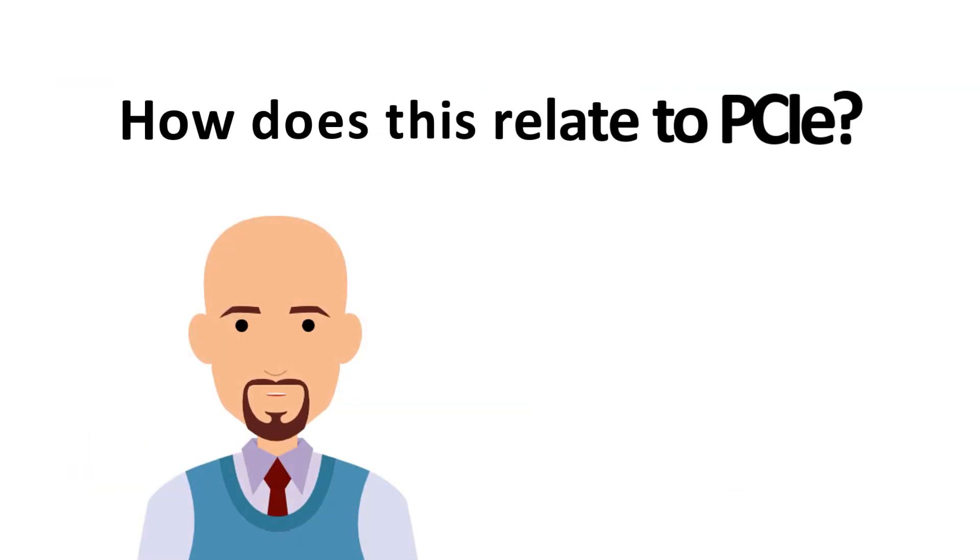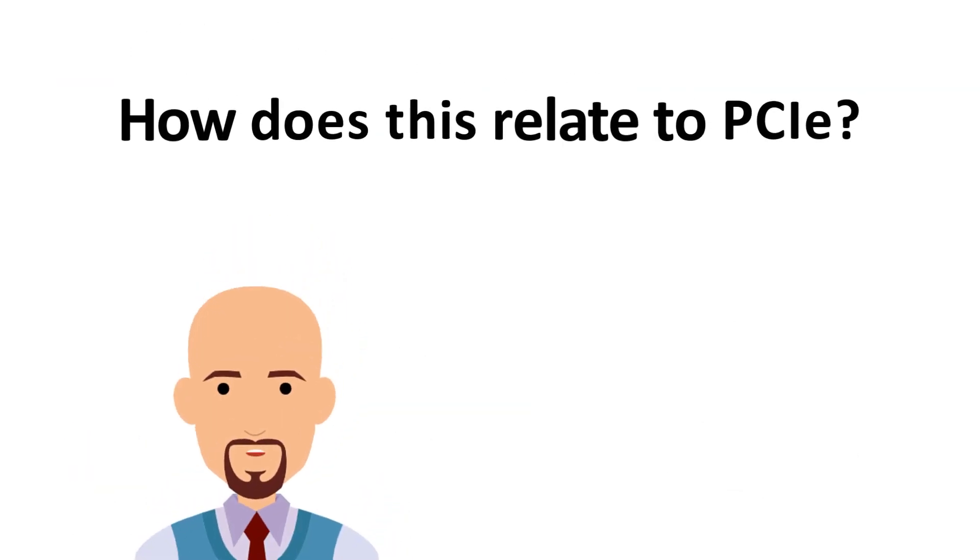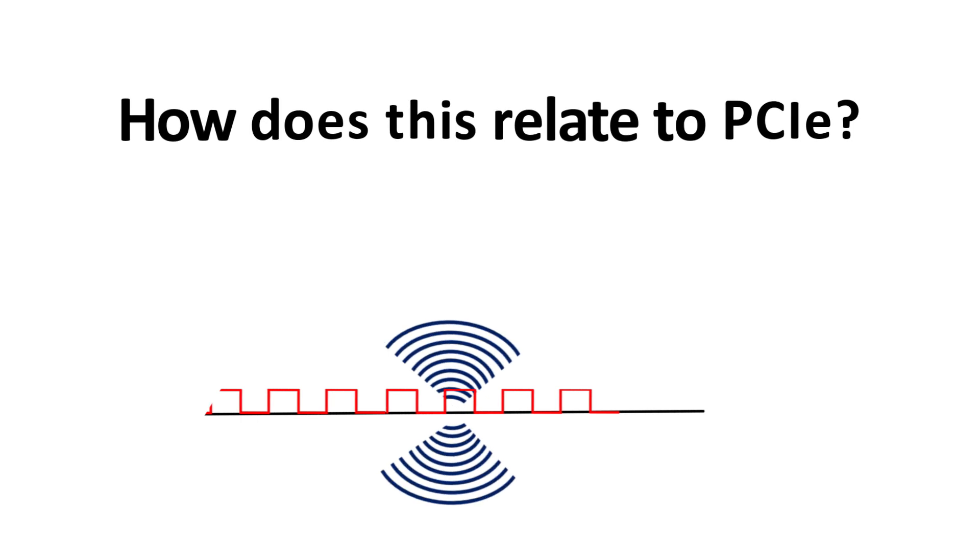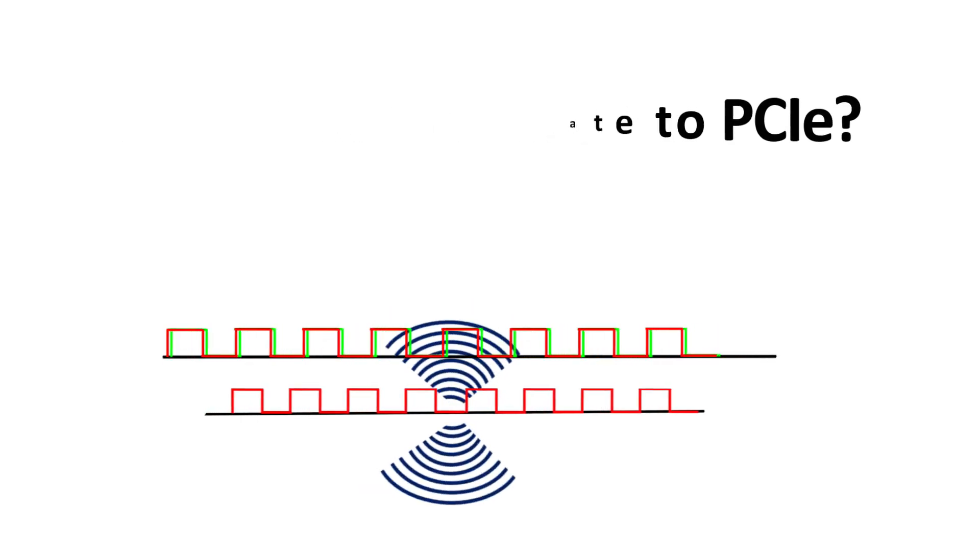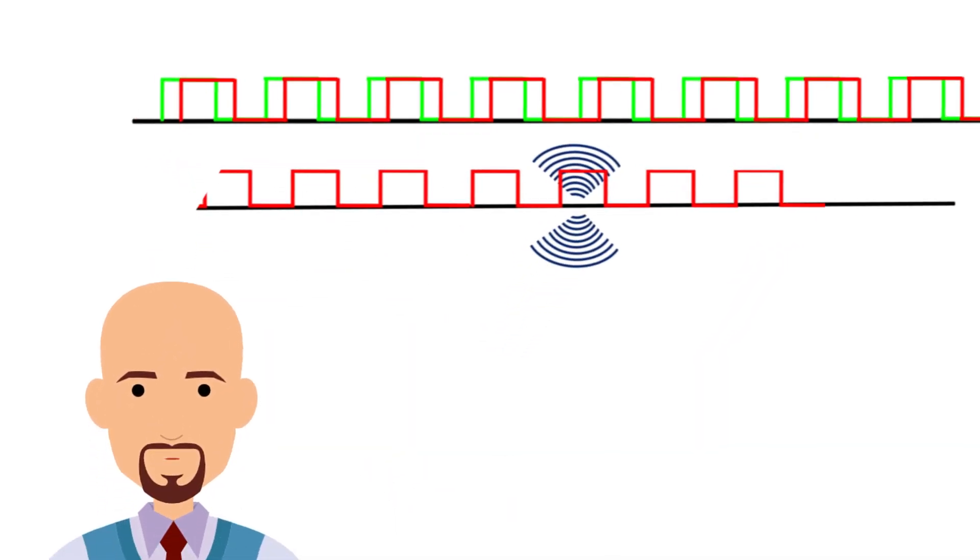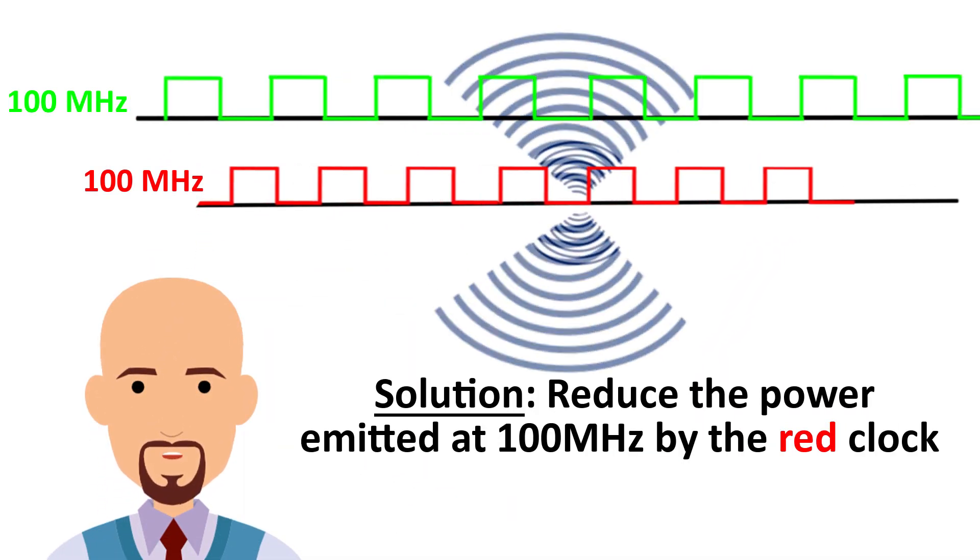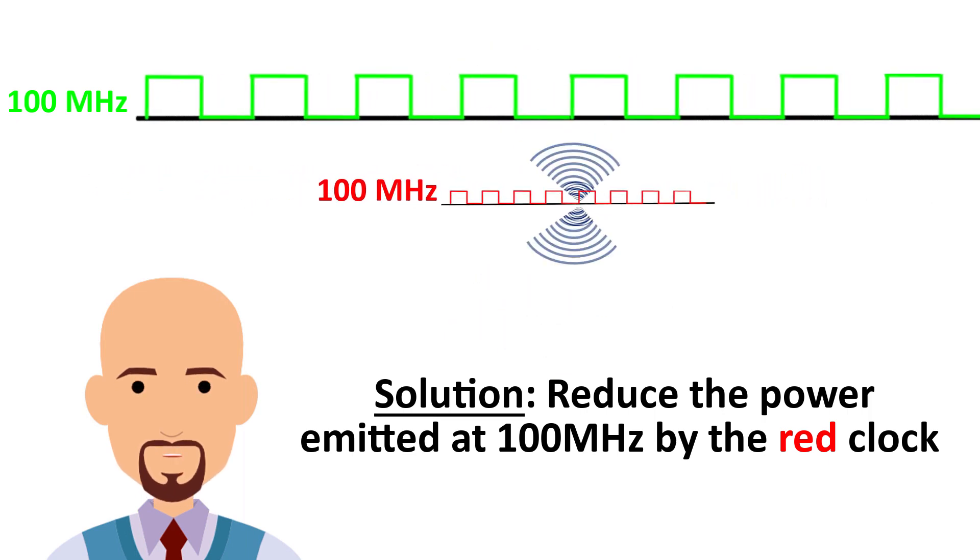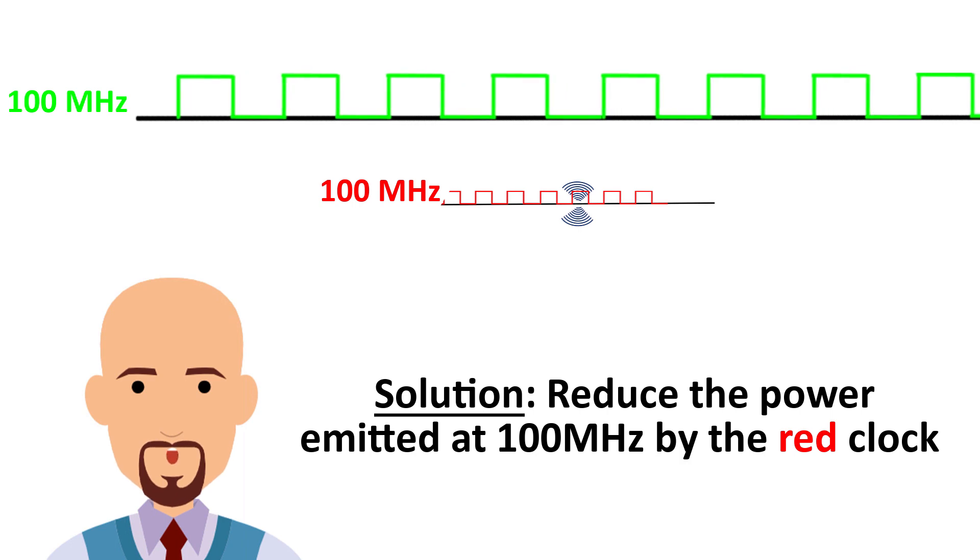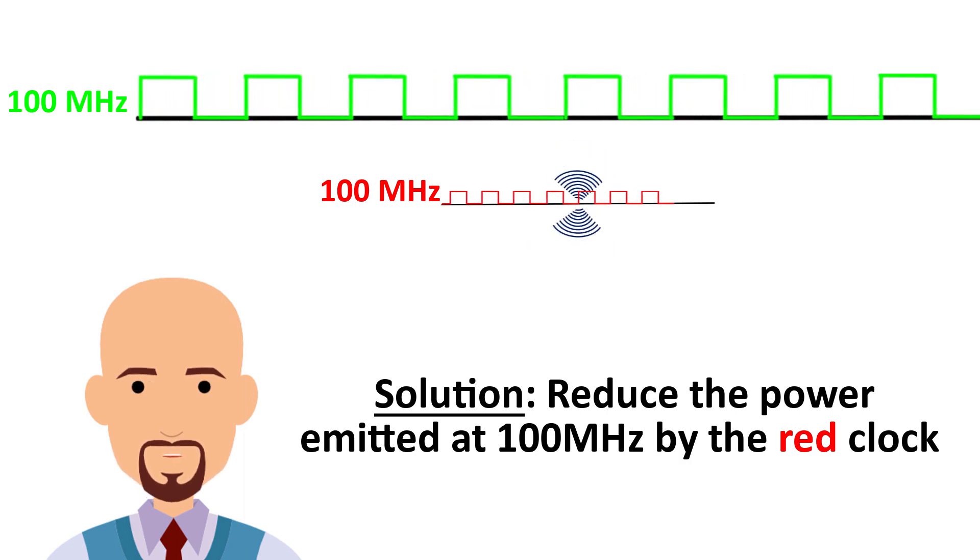So, how does this relate to PCIe? I am glad you asked! There are times when a PCIe clock may interfere with nearby clocks. Another clock may incorporate the radiated energy of the PCIe clock, thereby corrupting that other clock. The solution is to reduce the power at that PCIe clock frequency of, for example, 100 MHz, so that its radiated power is low enough not to corrupt the clocks in nearby systems.